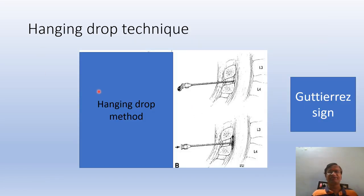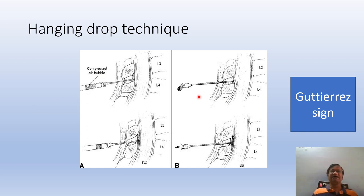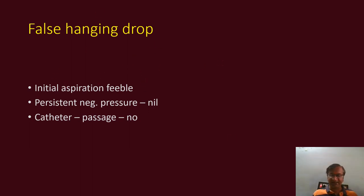This is the hanging drop sign. There are many videos demonstrating this. A compressed air bubble can also be seen here, which is why you can use air, saline, or both. Regarding the hanging drop method, a false hanging drop may occur — sometimes there is no persistent negative pressure, sometimes catheter message is absent, and sometimes the initial expiration is feeble. All these things can create a false hanging drop.